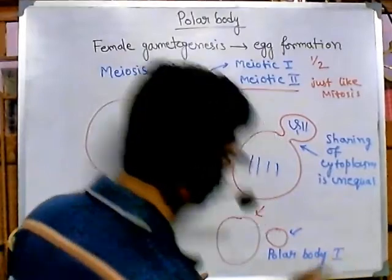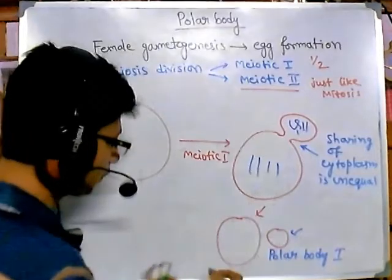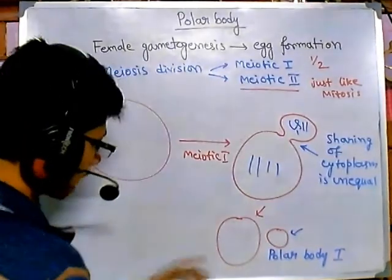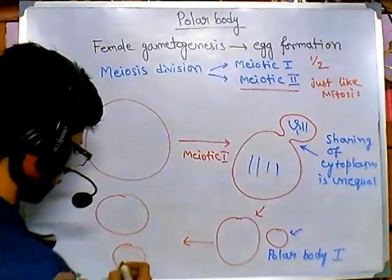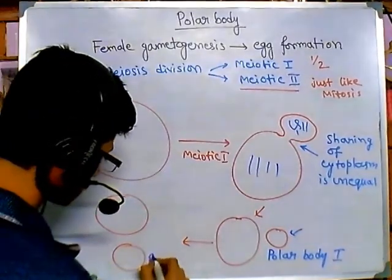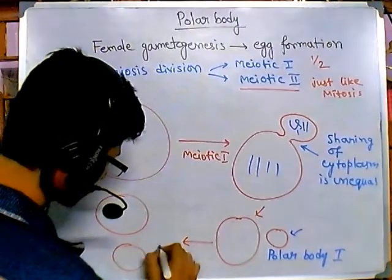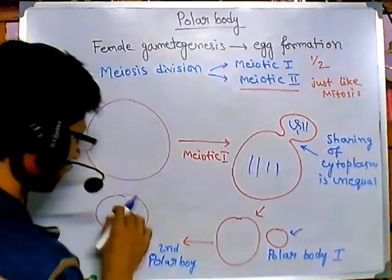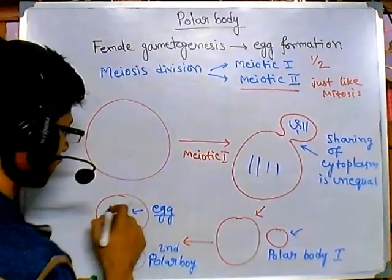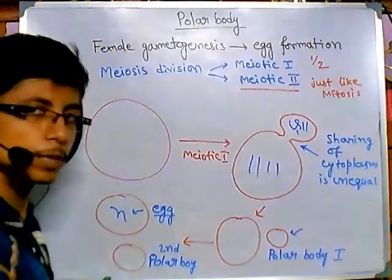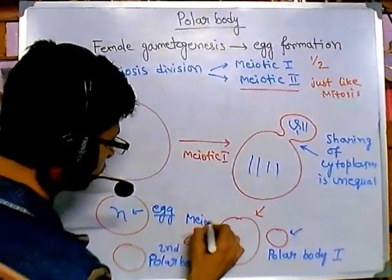Now after meiotic 2, the same thing happens — it again produces a large cell and a small cell. This second small cell is called the second polar body. And it produces finally the egg, because it is having the desired n number of chromosomes in it. So this is meiotic 2.